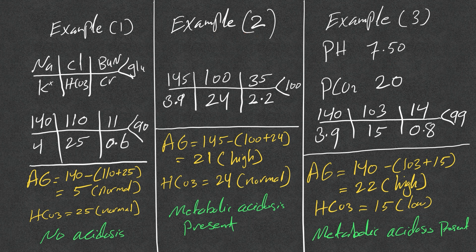Example 2: anion gap = 145 minus (124) = 21 — high. Bicarb is 24, which is pretty normal. But metabolic acidosis is present because of the elevated anion gap. So even a normal bicarb does not rule out metabolic acidosis.